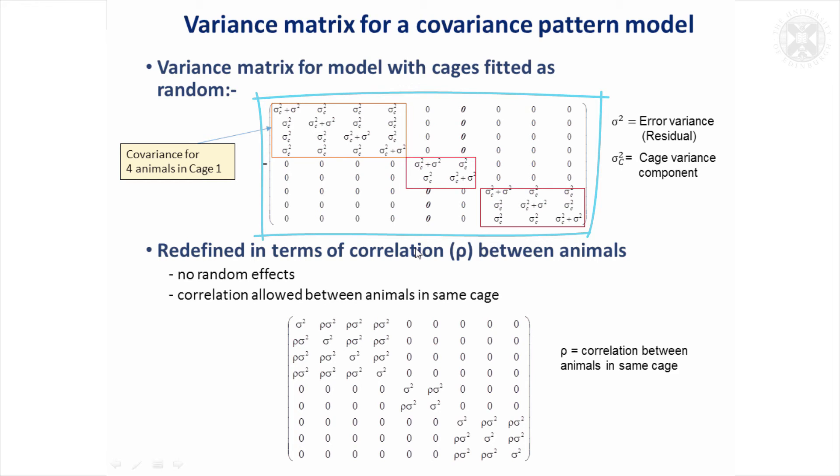And we're saying, well, that variance component might be negative, but it shouldn't. That's not allowed because it's a variance component. But what we can do, if we redefine that matrix in terms of correlations, we can redefine it like this.